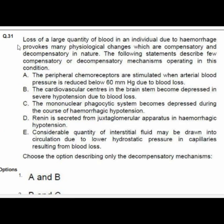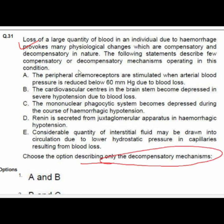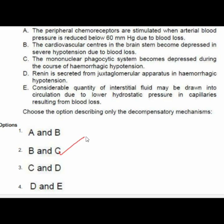Question 31: Loss of a large quantity of blood due to hemorrhage provokes compensatory and decompensatory physiological changes. We must select only the decompensatory mechanisms. Option 2 is correct: B — cardiovascular centers in the brainstem become depressed in severe hypotension due to blood loss; C — mononuclear phagocytic system becomes depressed during hemorrhagic hypotension.